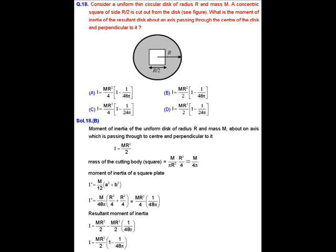The moment of inertia of the square plate is I' = (m/12)(a² + b²), about an axis through its center and perpendicular to it. Substituting values, I' = (M/48π) × (R²/4 + R²/4), which gives I' = MR²/4 × (1/48π).